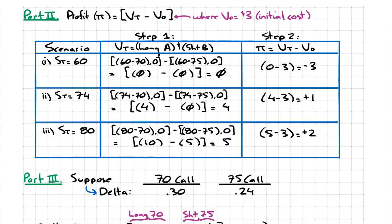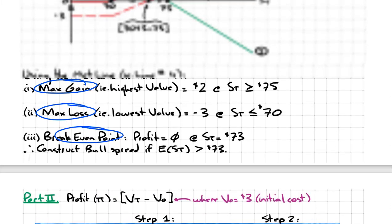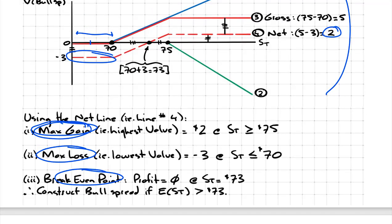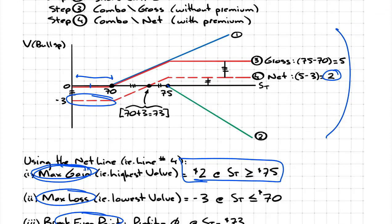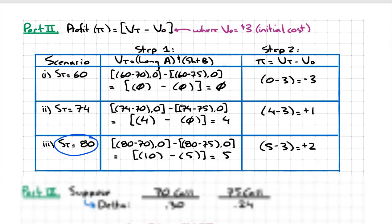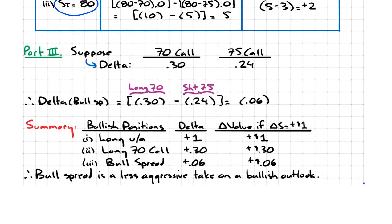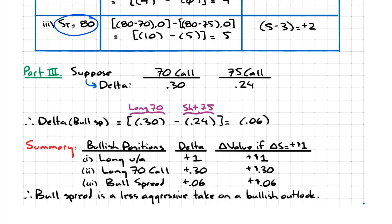We already would have known this from our framework. Spot price 80 — maximum gain at any spot price greater than 75 — we've already reached the ceiling for profit potential, and it's $2. In part three, suppose the delta for the 70 call is 0.3 and the 75 call is 0.24. We're asked to find the delta for the entire bull spread position.